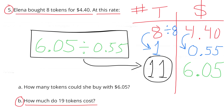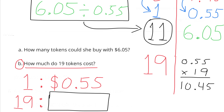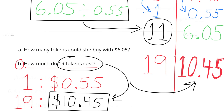B. How much do 19 tokens cost? We know each token costs 55 cents. To find the cost of 19 tokens, multiply 19 × 55 cents, which equals $10.45. To buy 19 tokens, it would cost $10.45.